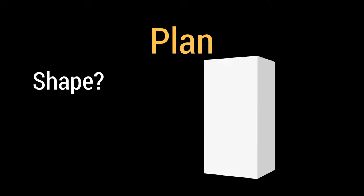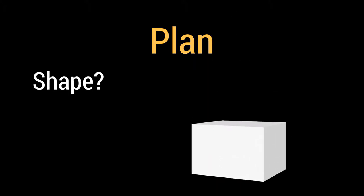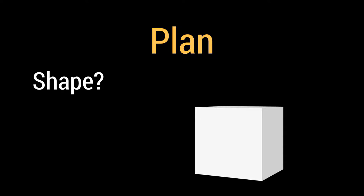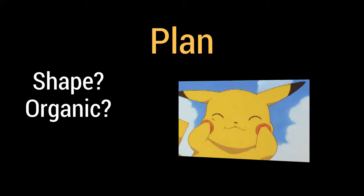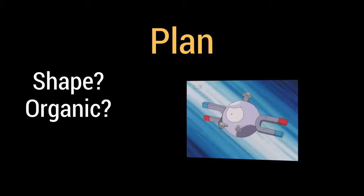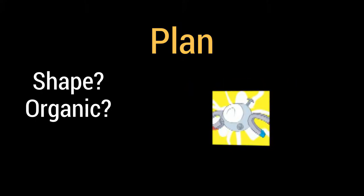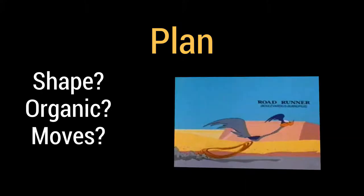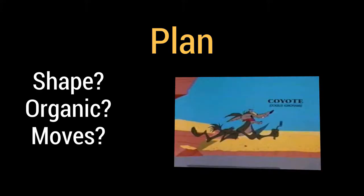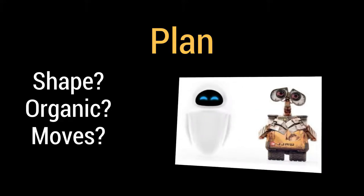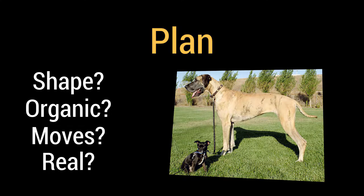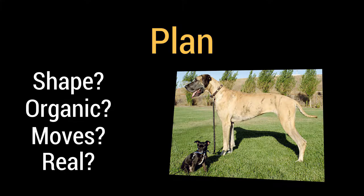For example, the shape — is it a tall character or a small character? The shape will define its personality as well. Is it organic, with actual muscles or fur, or is it rigid or metallic, non-moving or a bit moving? Does it move fast or slow? Does it have wheels, legs, or maybe it floats? Is it real? Because you can say 'I want to make a dog,' but what kind of dog? Maybe you want to make a cool dog — it all makes a big difference.